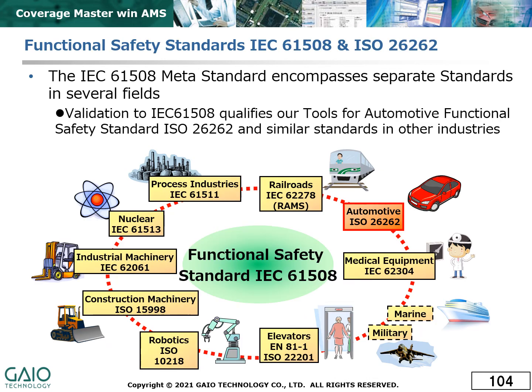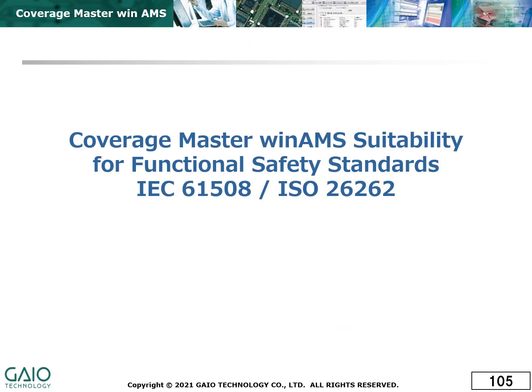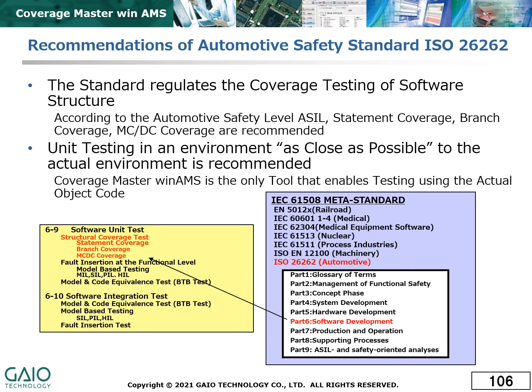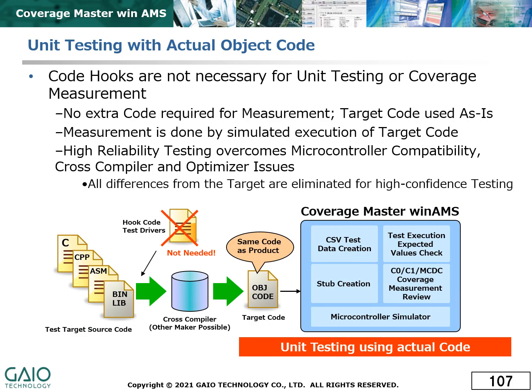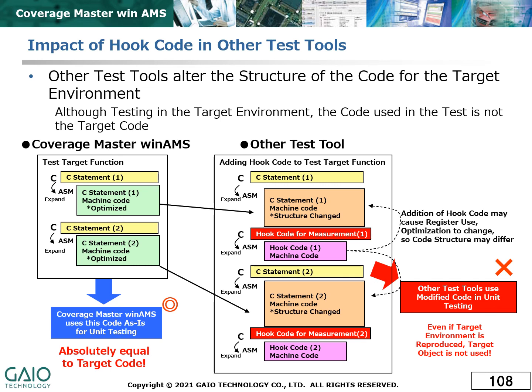The IEC 61508 standard is a generic standard that covers many engineering fields. More specific standards exist for each specific field, such as ISO 26262 for the automotive industry. The automotive safety standard ISO 26262 requires coverage testing of software structure in an environment as close as possible to the actual environment in which the software will be executed. CoverageMaster WinAMS provides all levels of coverage testing using the actual object code. The benefits of testing using the actual object code include eliminating any possible effects caused by cross-compiler differences, optimizer issues, and the addition of code hooks, meaning that the testing is highly reliable. Other test tools modify the object code so that even if the target environment is accurately reproduced, the code being executed is not the same as the object code.